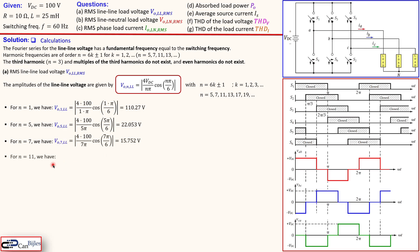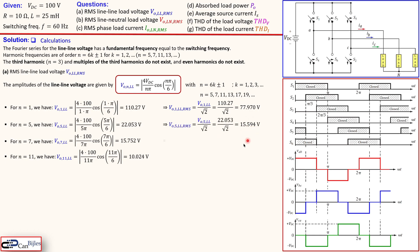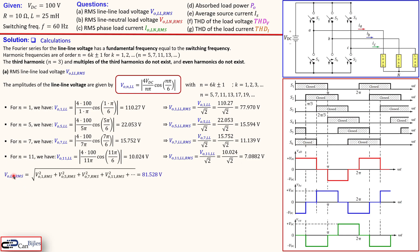These are the amplitudes for the fundamental, fifth, seventh, and eleventh harmonics. To get RMS values, divide each amplitude by √2, giving 77.97 V for the fundamental and 15.594 V for the fifth harmonic, and so on. The total RMS line-to-line load voltage is calculated by squaring each term, summing, and taking the square root — going up to n=101 gives 81.528 volts.